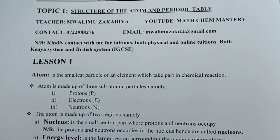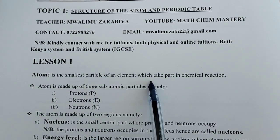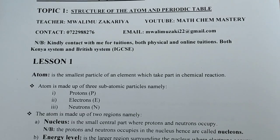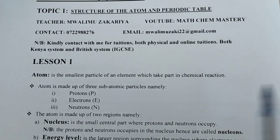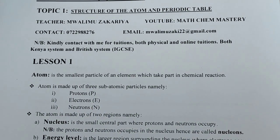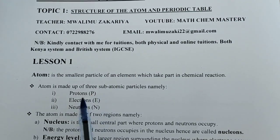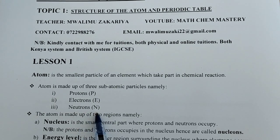First, an atom is the smallest particle of an element which can take part in a chemical reaction. The smallest particle of an element which always takes part in a chemical reaction is what we refer to as an atom. The atom is made up of three subatomic particles, namely: proton, abbreviated as P; electrons, abbreviated as E; and neutrons, abbreviated as N.